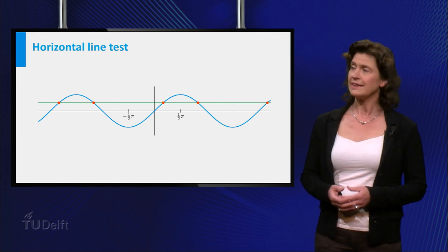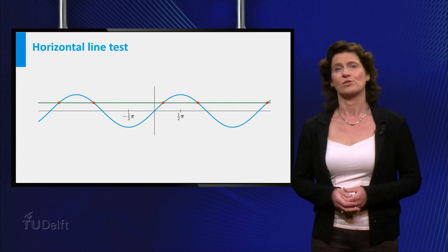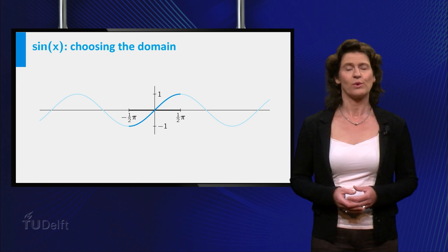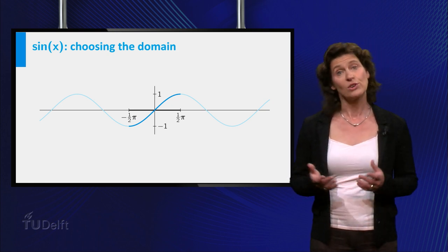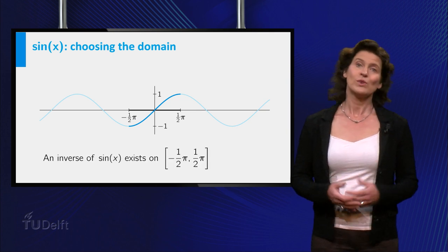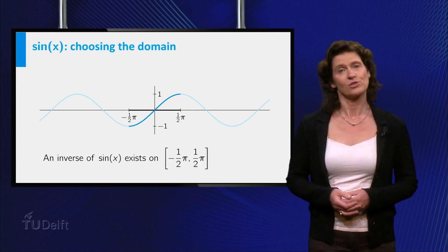What would an appropriate domain be? Looking at the graph, you see that an interval where the function ascends from minus 1 up to plus 1 would be convenient. We mathematicians then prefer the one that contains the origin.